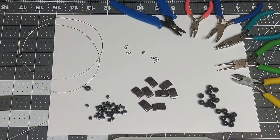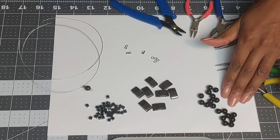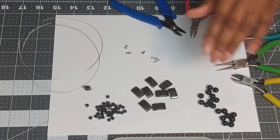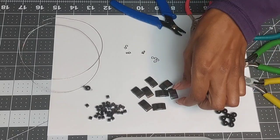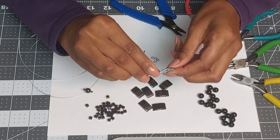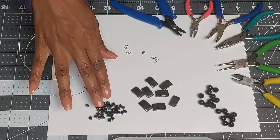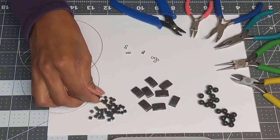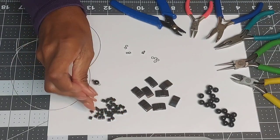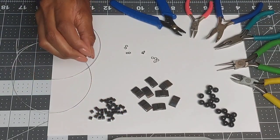The materials you will need for this project are 18 eight millimeter beads. I happen to be using onyx beads. Eight double hole hematite tile beads. You see they're kind of rounded there. 36 four millimeter square hematite beads. One magnetic clasp.